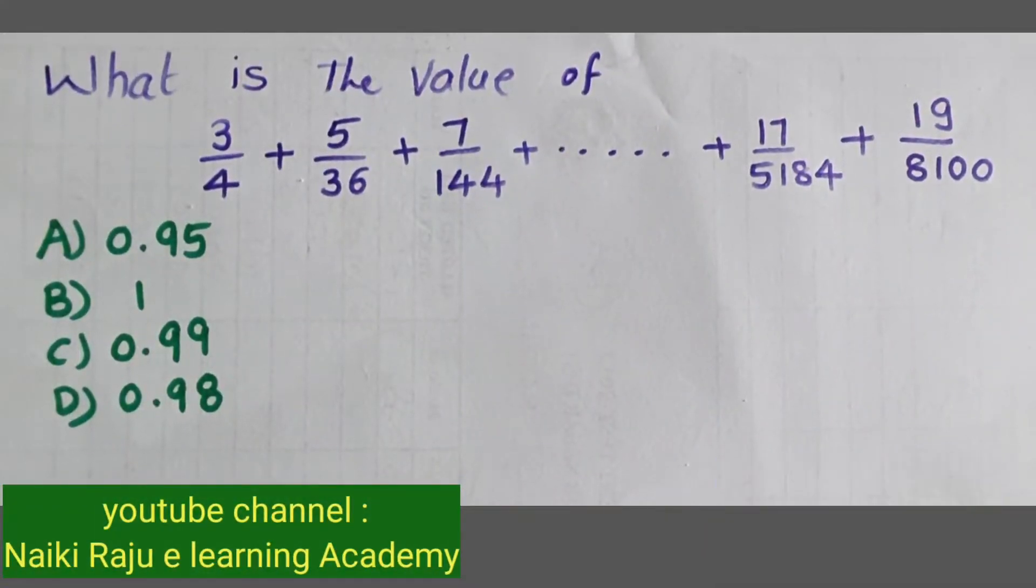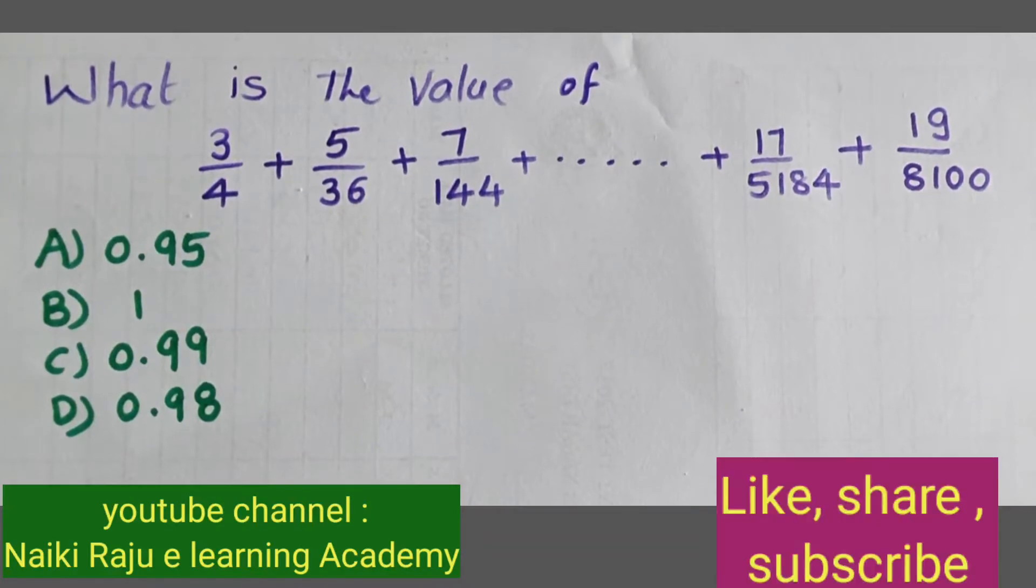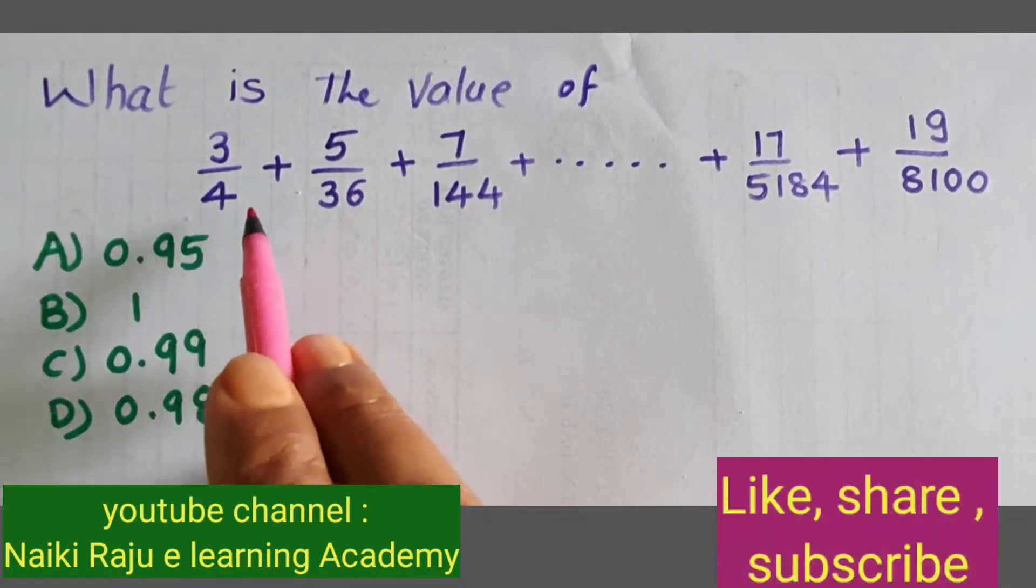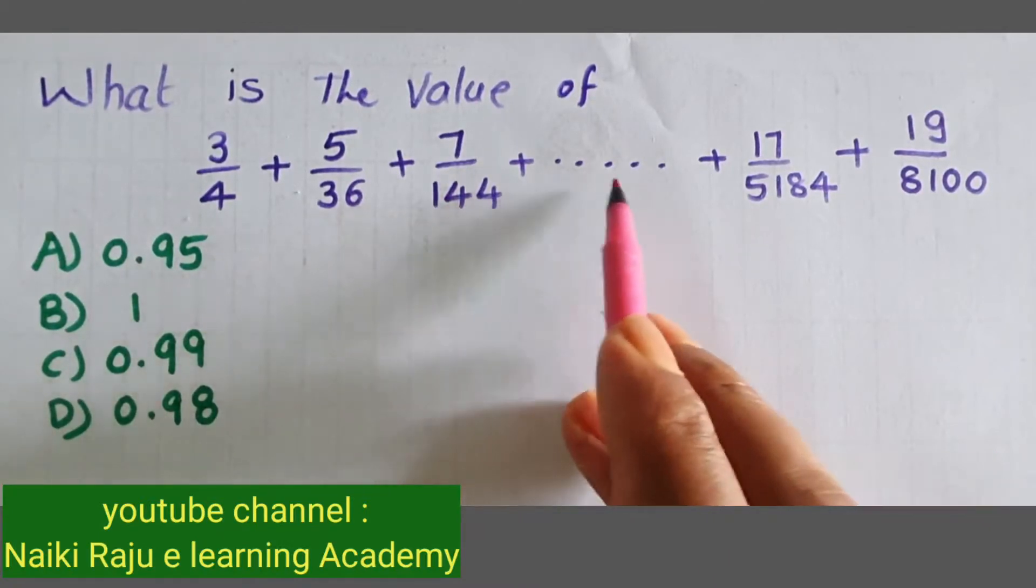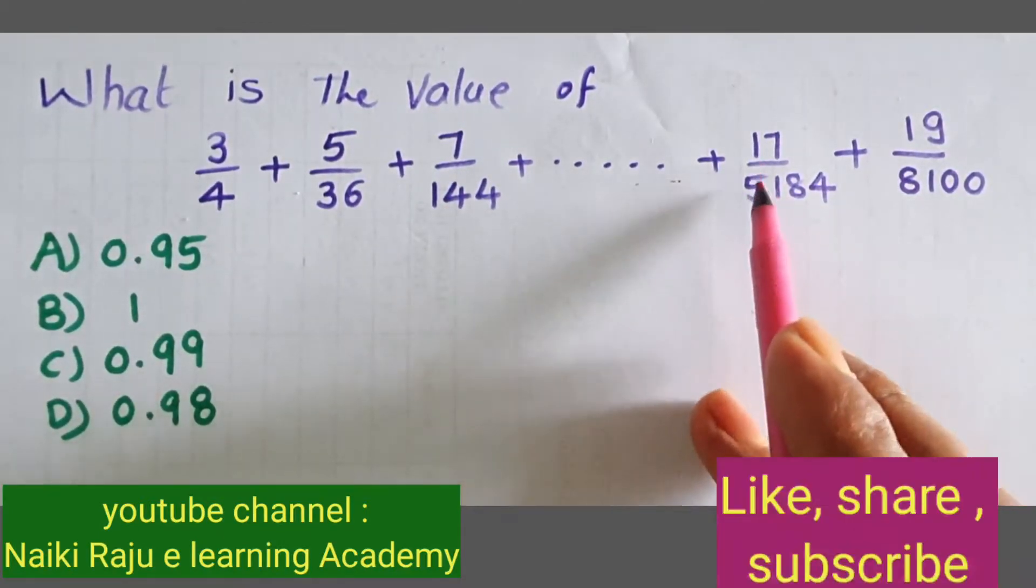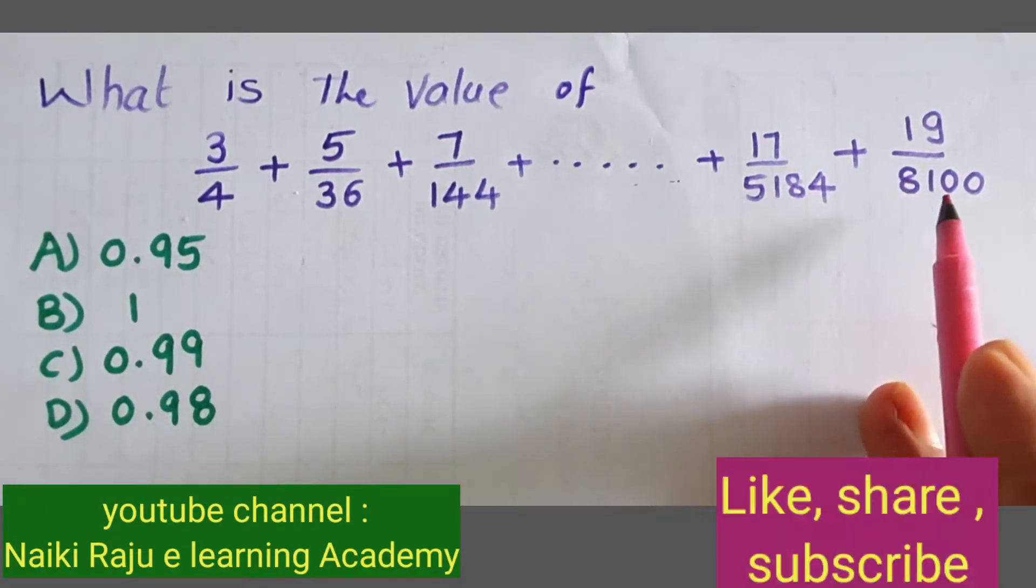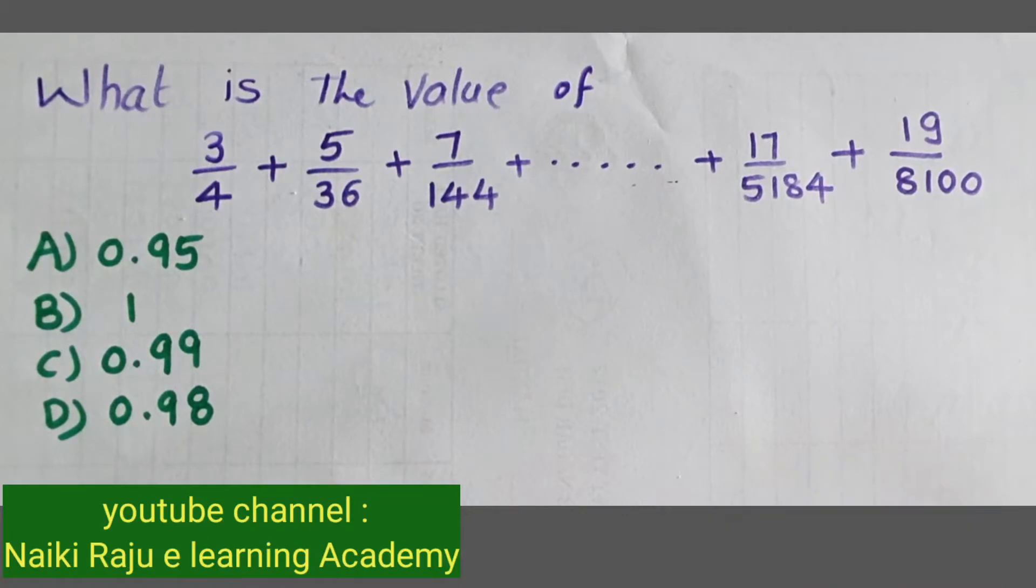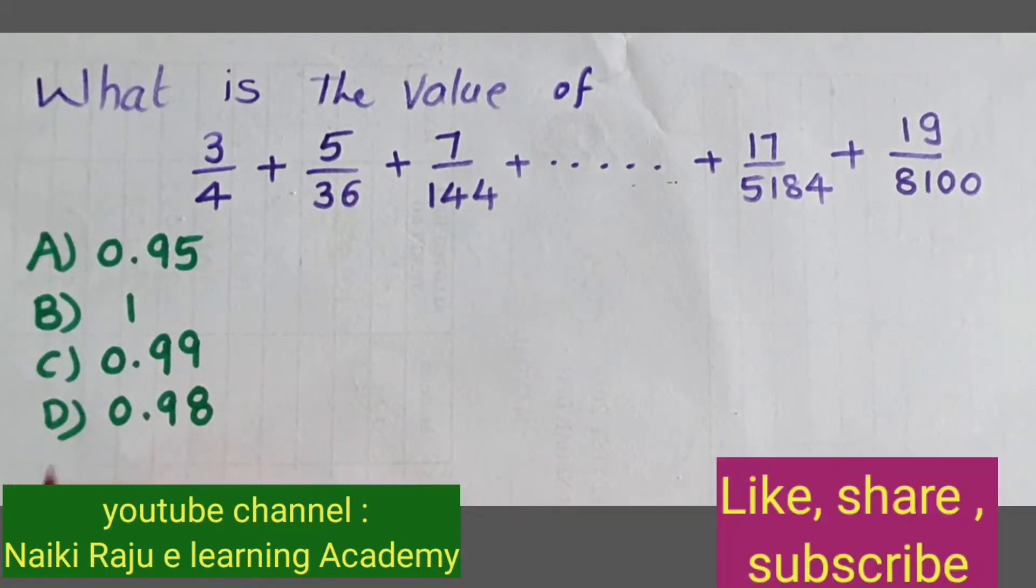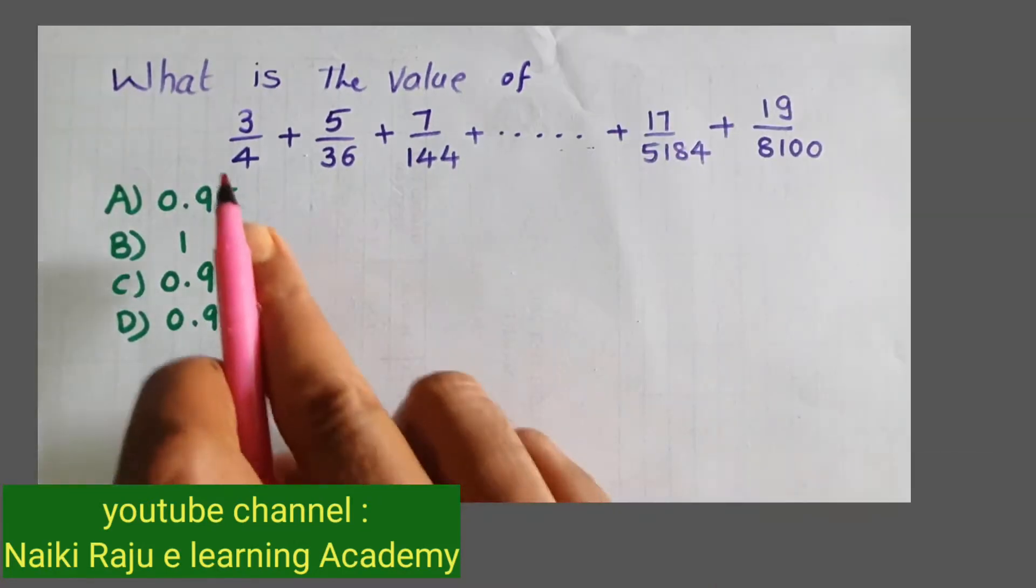Hi students, observe the question. What is the value of 3/4 + 5/36 + 7/144 + ... + 17/5184 + 19/8100? I'll show the complete solution. Look at options A, B, C, D - which is the correct option?